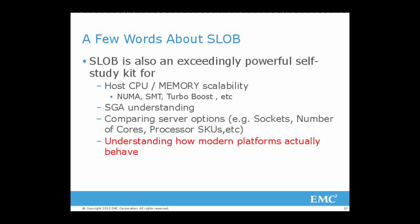The other thing SLOB can do is give you good, deep SGA understanding. You can use it to compare server options — like how many sockets, numbers of cores in those sockets, and processor SKUs. Anybody know how many Sandy Bridge parts there are? There are about eleven of them, running the gamut from different power envelopes, different numbers of cores, different cache sizes — it's very complex, but we're going to make some more sense of it.